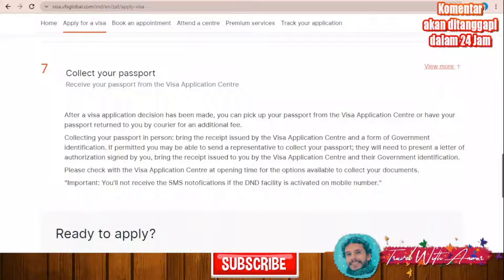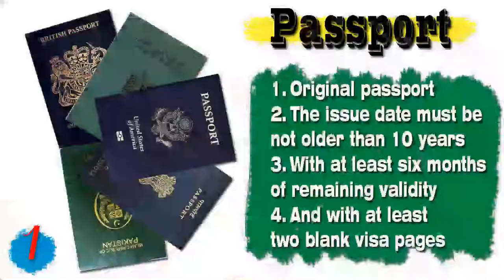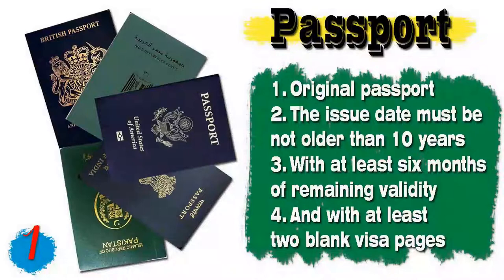Now let's speak about all the required documents for applying for a visa for South Africa. The first document is your passport. The passport must be original, the issue date must not be older than 10 years, with at least six months of remaining validity, and with at least two blank visa pages for stamps.